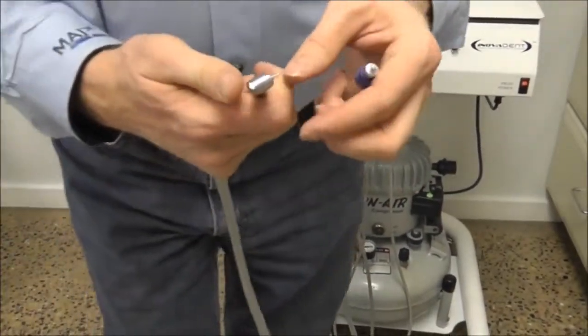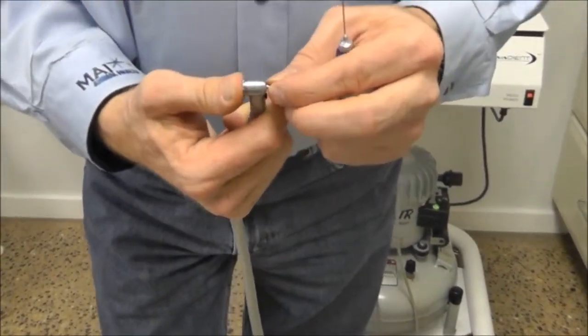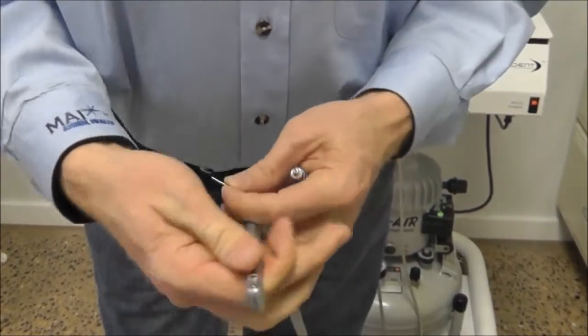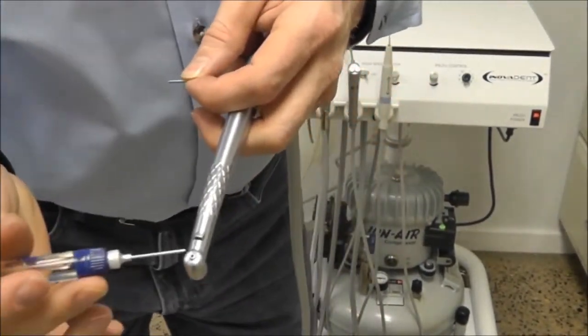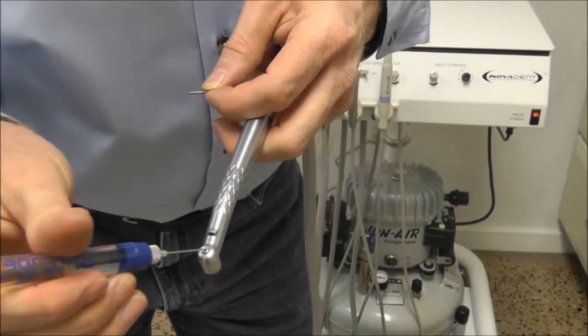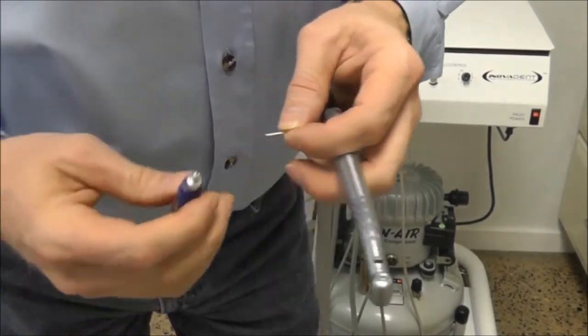On our high speed unit, remove the burr and place a drop of oil right down the port where the burr goes into the turbine.